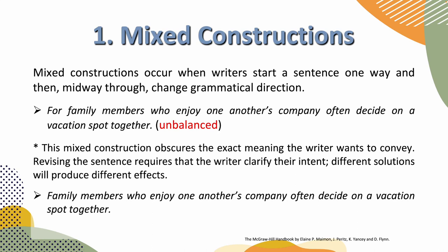For example, an unbalanced sentence would be: 'For family members who enjoy one another's company, often decide on a vacation spot together.' This mixed construction obscures the exact meaning the writer wants to convey. Revising the sentence requires that the writer clarify their intent. Different solutions will produce different effects. 'Family members who enjoy one another's company often decide on a vacation spot together.' You can see how we change the sentence around to make it more balanced.